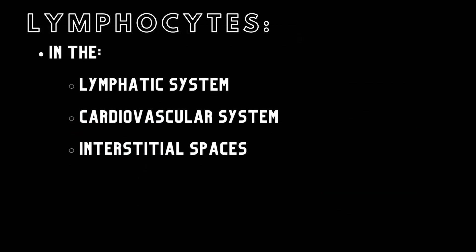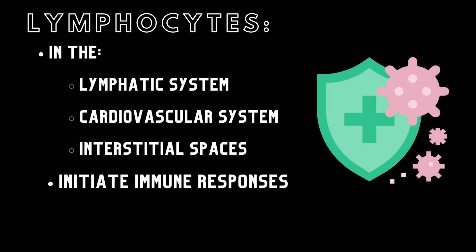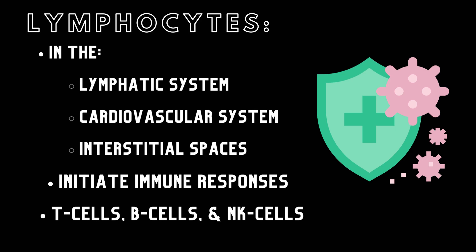Lymphocytes are found within the lymphatic system, cardiovascular system, and the interstitial spaces of the body. Lymphocytes will initiate an immune response when a pathogen is encountered. There are three classifications of lymphocytes: T cells, B cells, and NK cells.